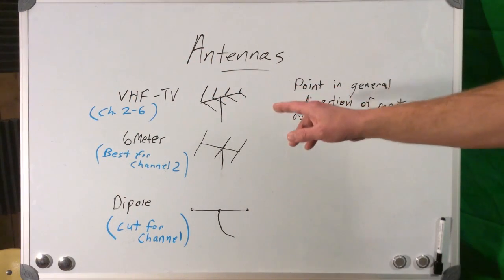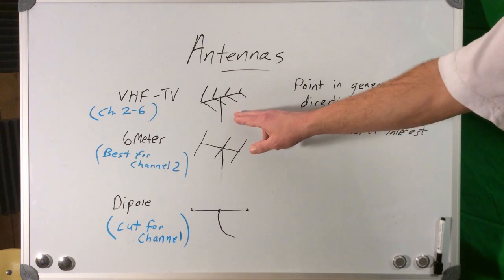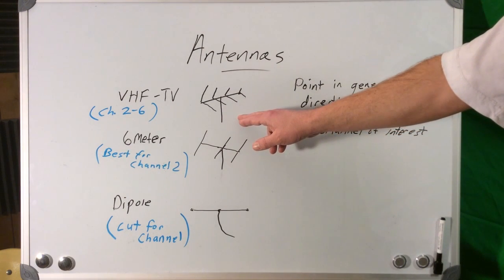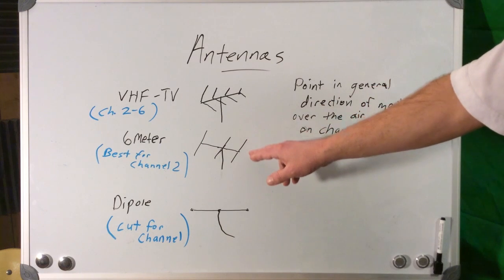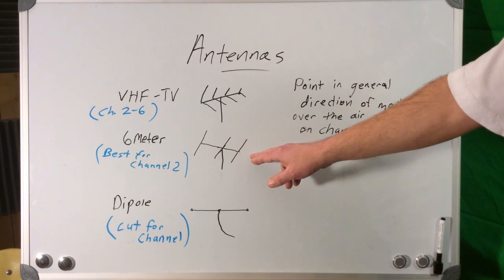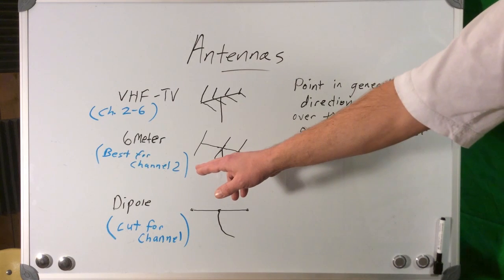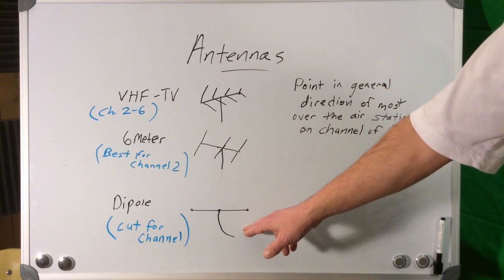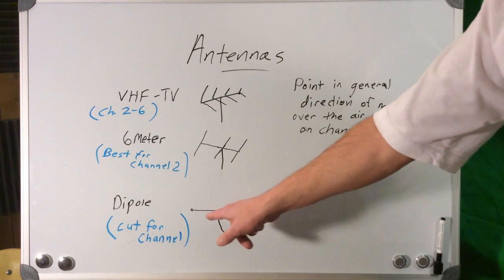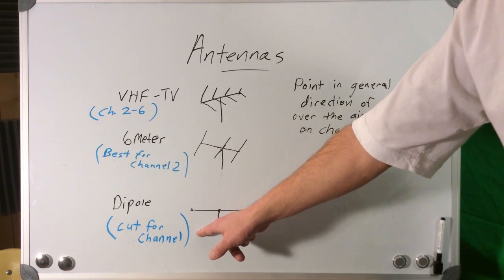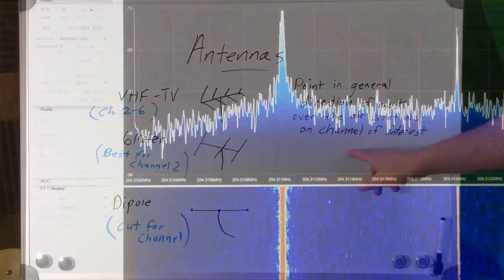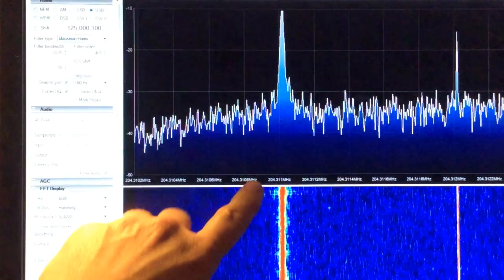As far as antennas go, if you already have a VHF type TV antenna, that should work very well — it covers channel 2 through 6. Also a 6 meter beam antenna or any type of 6 meter antenna should work very well, especially for the lower channel 2. And if nothing else, you can always cut a dipole for the channel of interest using 468 divided by the frequency in megahertz. Then point the antenna in the general direction of the most stations.